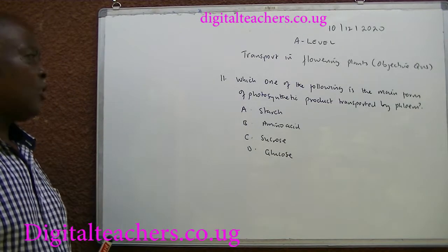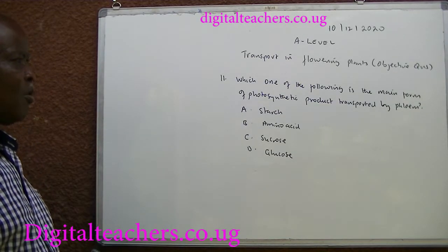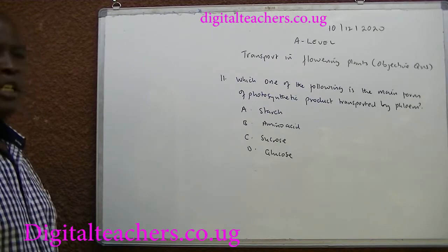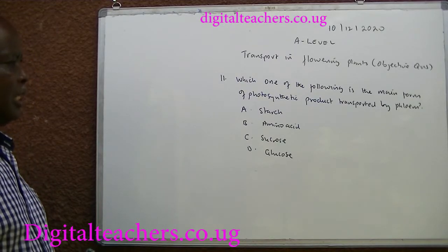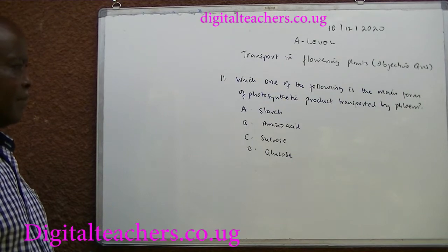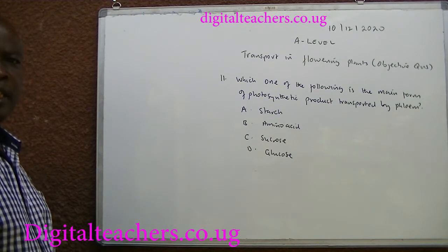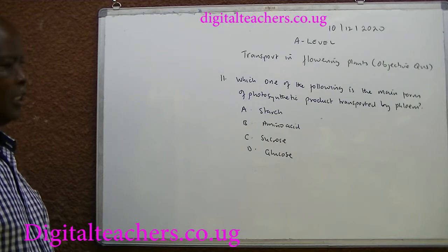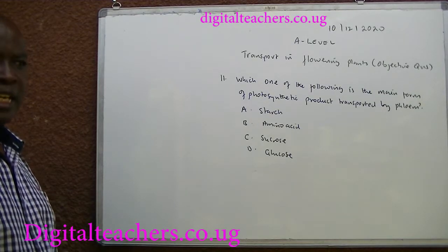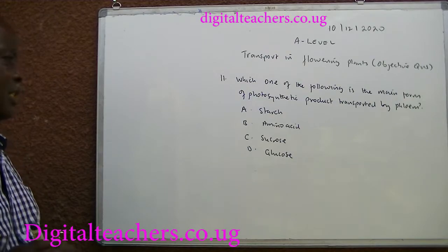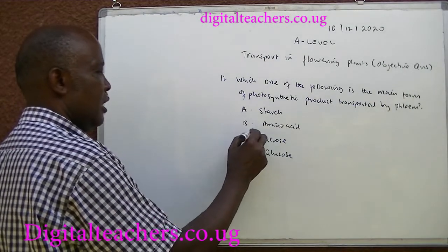Number 11. Which one of the following is the main form of photosynthetic product transported by phloem? A. Starch. B. Amino acid. C. Sucrose. D. Glucose. You can pause and answer. The answer is C. Sucrose.